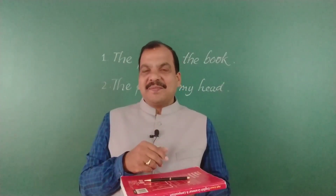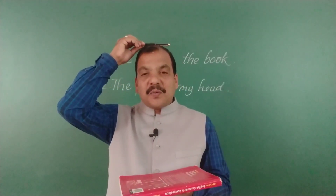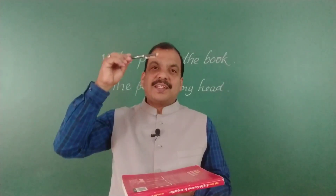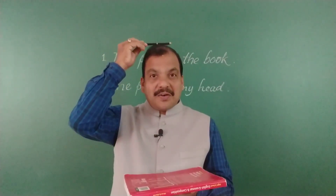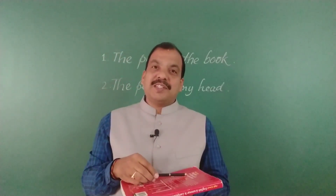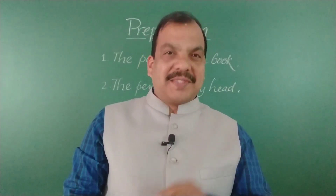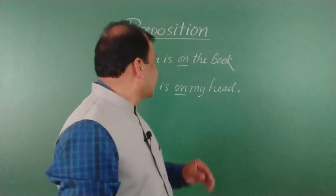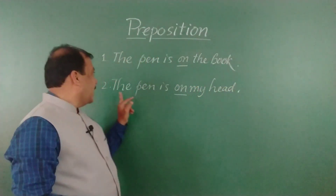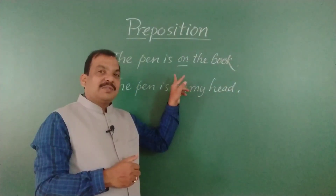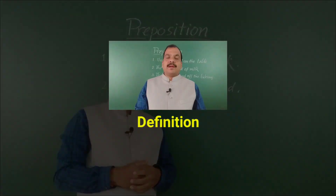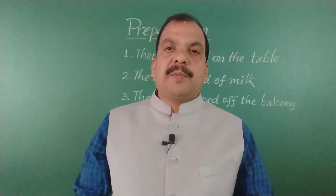In the second sentence, the sender wanted to tell you that the pen is on my head. So when 'on' is missing, you see the meaning becomes 'the pen is my head' — how dangerous! So we understand the value of these words in their absence. The complete sentences are: 'The pen is on the book' and 'The pen is on my head.' These missing words — 'on' — are prepositions.